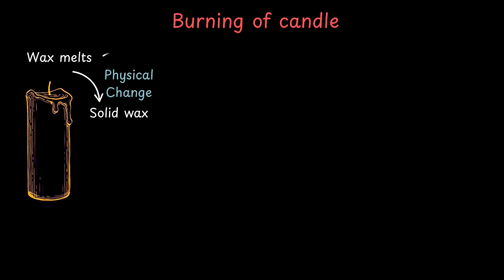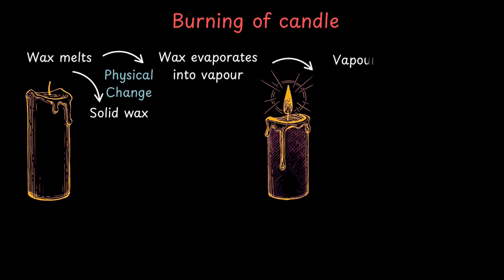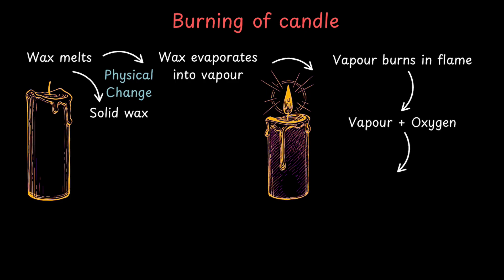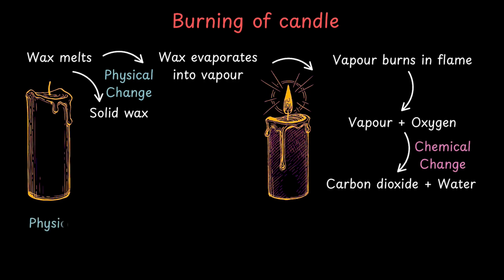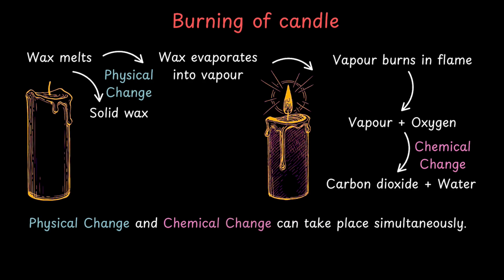Next, the wax evaporates into vapour because of the heat — again, a physical change. And then the vapour burns in the flame. The vapour reacts with oxygen in air, and new substances like carbon dioxide and water are formed. And that's a chemical change.